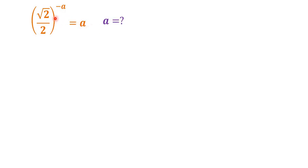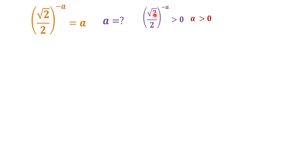First of all, let's think about the range of a in this equation. We know that square root 2 over 2 to the power of negative a is always positive, so a is positive.